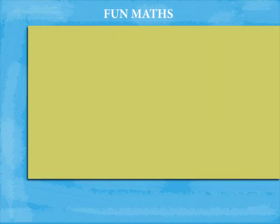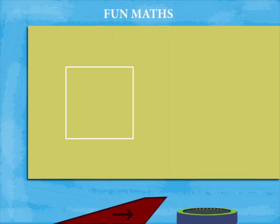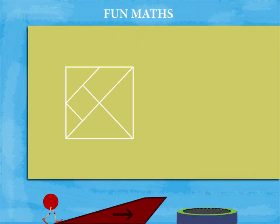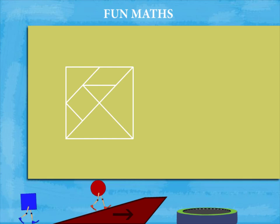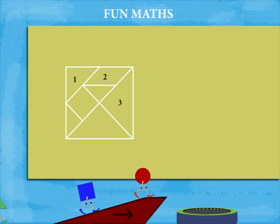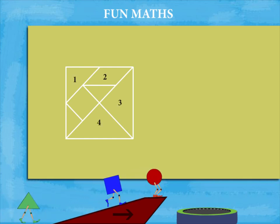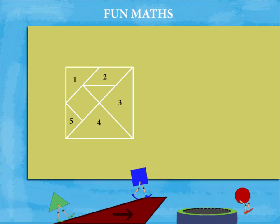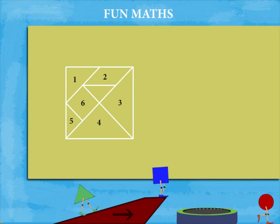Fun Mats! Here is a figure coming up with straight lines. It has 1, 2, 3, 4, 5, 6 and 7 parts.